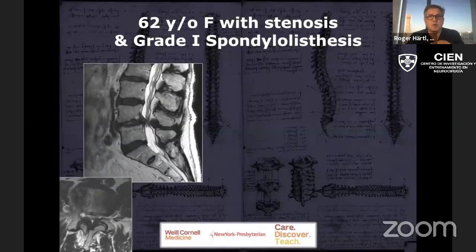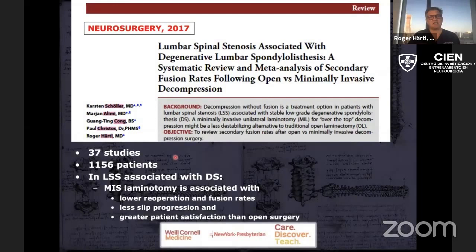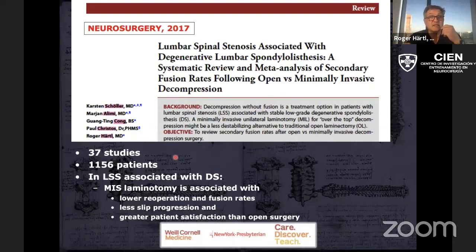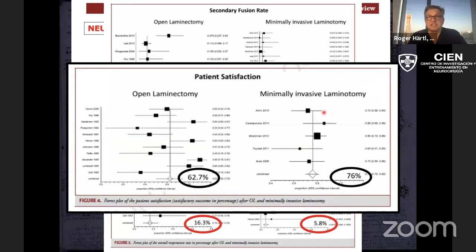We've treated hundreds of patients like that. One of the fellows summarized the literature on patients with lumbar spinal stenosis and spondylolisthesis, comparing open decompression versus minimally invasive decompression. The verdict is very clear: if you do an open traditional laminectomy, almost 13% of those patients will come back needing a fusion, versus only 3.3% of patients who have a minimally invasive decompression. Patients are also happier when they have a less invasive operation.